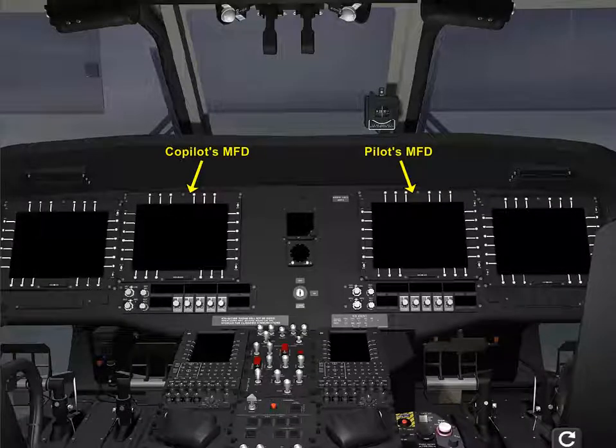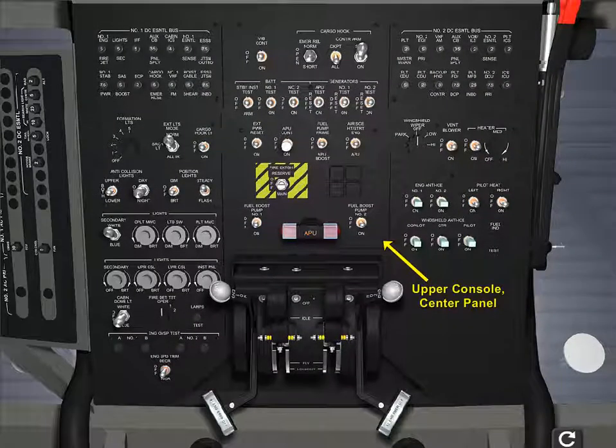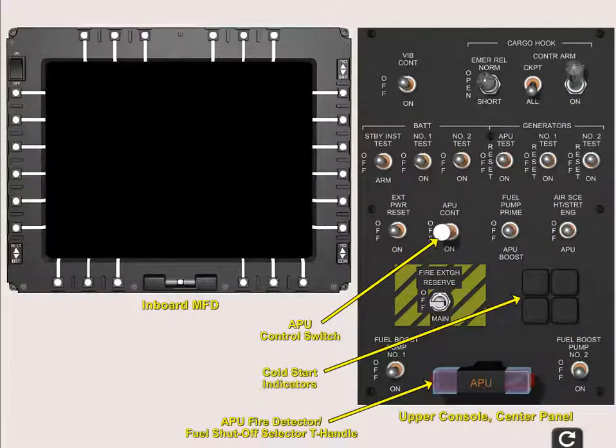APU controls. The APU controls are in the cockpit on the upper console. The controls consist of an APU control switch and an APU fire detector fuel shutoff selector T-handle. Indicator lights on the upper console and the pilots and co-pilots inboard displays permit cockpit monitoring of the APU system.